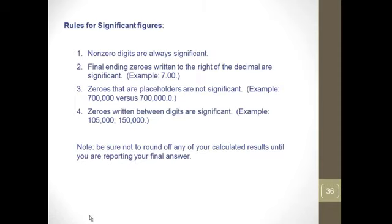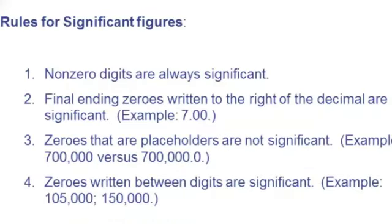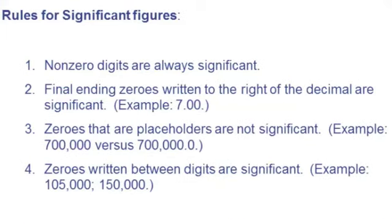Here are rules for significant figures that I'm sure you've worked with before. Non-zero digits are always significant. Final zeros written to the right of the decimal are significant. Zeros that are placeholders are not significant. They're just simply telling us where to put the non-zero digits. And zeros between digits, I always call them zero sandwiches, are significant.